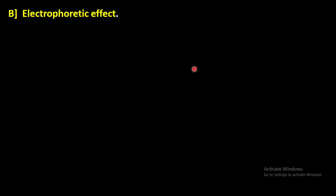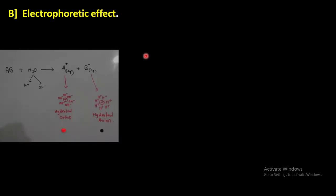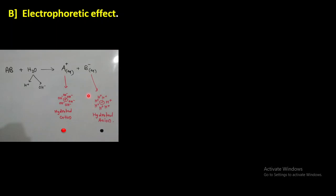The second aspect is the electrophoretic effect. Electro means electricity and phoresis means movement. When a strong electrolyte is dissolved in water to form an aqueous solution, the ions interact with water molecules. H₂O splits into H⁺ and OH⁻ ions — the cation is surrounded by OH⁻ ions forming a hydrated cation, and the anion is surrounded by H⁺ ions forming a hydrated anion. The hydrated cation will be represented by a red circle and the hydrated anion by a black circle.